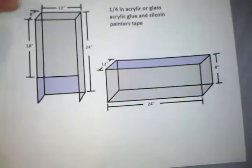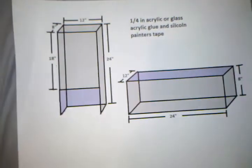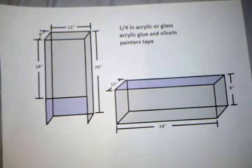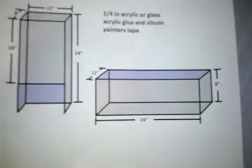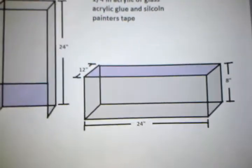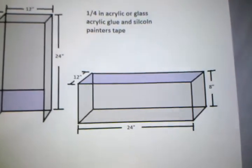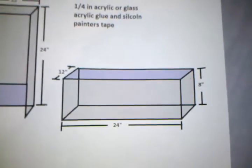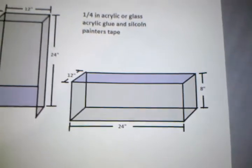The back piece of glass is 12 by 24, as you can see. Then we got the bottom tank here, which is 12 by 8 by 24.